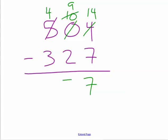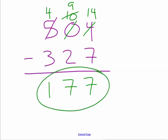9 tens minus 2 tens is 7 tens. 4 hundreds minus 3 hundreds is 1 hundred. So my solution is 177.